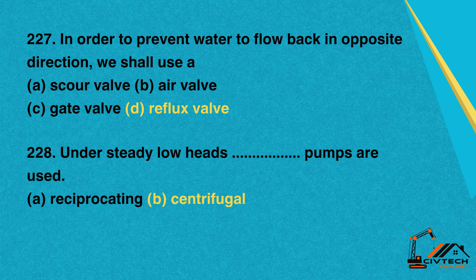Question 229: For high and fluctuating heads, which pumps are used? A. Reciprocating. B. Centrifugal. Correct option: A. Reciprocating.